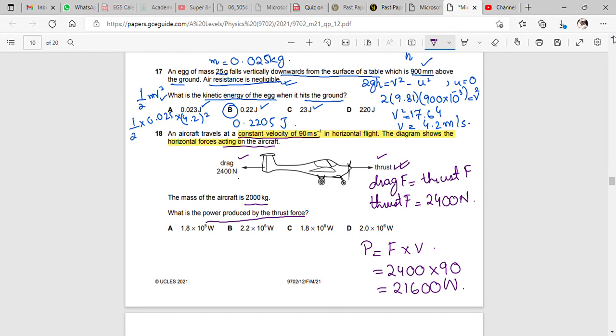When you write it in exponential form, what will happen? B. 2.2 exponent 5 watts.